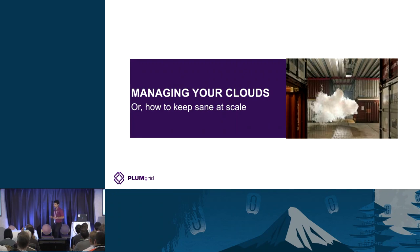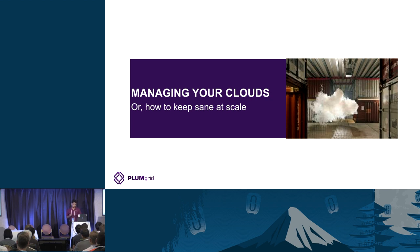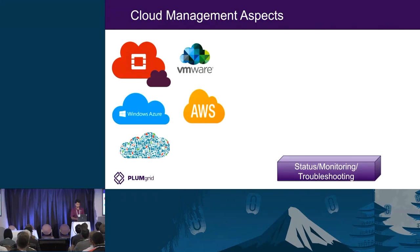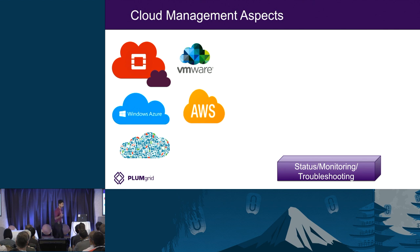Let's talk about managing your cloud — or as I call it, how to keep sane at scale. I admit to having a little bit of a bureaucrat in me — I love documentation, which is a strange admission coming from someone who works for a startup. When I look at a multi-cloud, the things I worry about are: how do I know what's going on in the cloud? How do I figure out what the status is? How do I monitor it for defects? And if something goes wrong, how do I troubleshoot it?